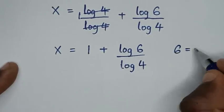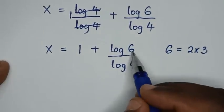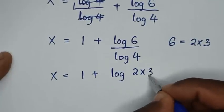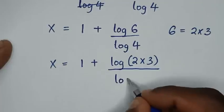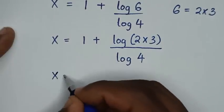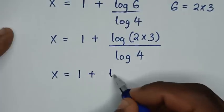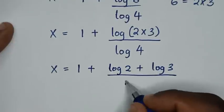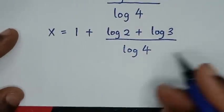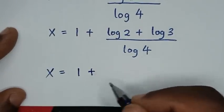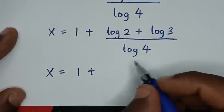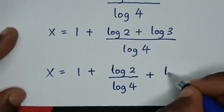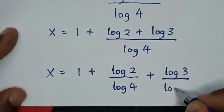Now, since 6 is equal to 2 times 3, we substitute 2 times 3 for 6. So log of 6 becomes log of 2 times 3, which by the product rule is log of 2 plus log of 3, all over log of 4. This gives x is equal to 1 plus log of 2 over log of 4, then plus log of 3 over log of 4.